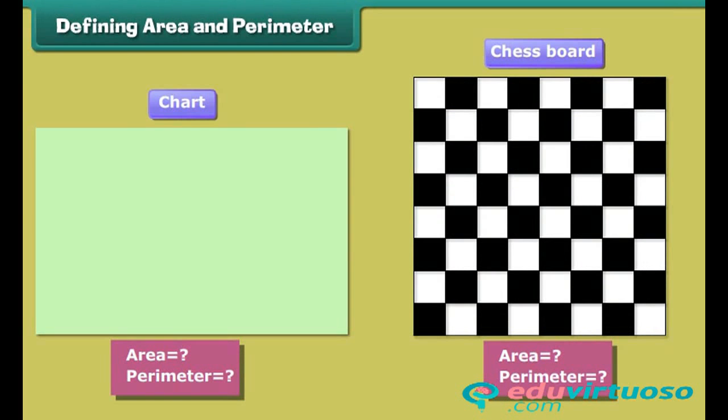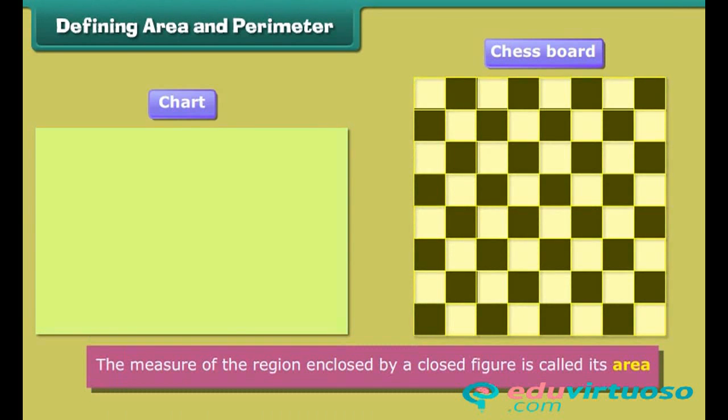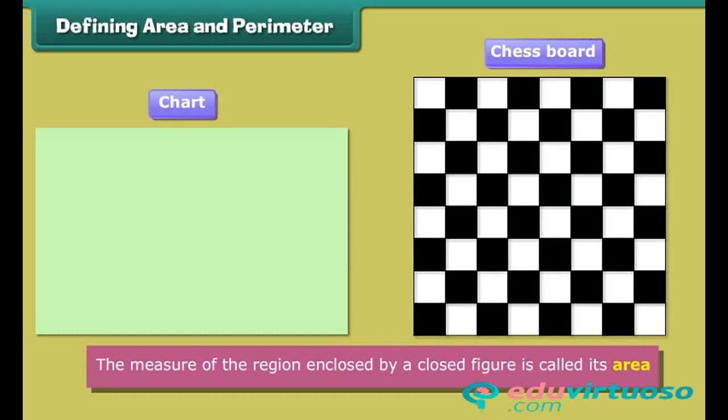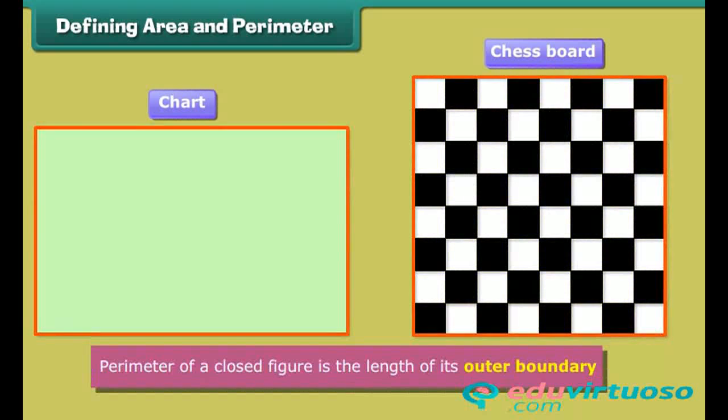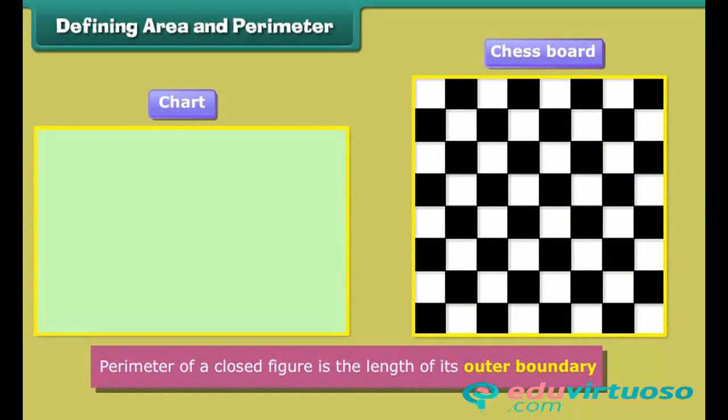How can the area and perimeter of such mathematical figures be calculated? The measure of the region enclosed by a closed figure is called its area. Perimeter of a closed figure is the length of its outer boundary. Let us now find the ways of calculating area and perimeter of rectangles and squares.